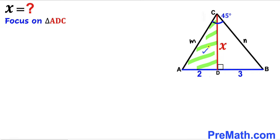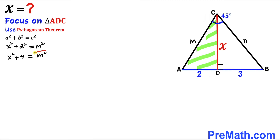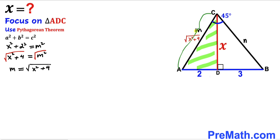Let's focus on right triangle ADC and apply the Pythagorean theorem: a² + b² = c². Our hypotenuse is m, and our two other legs are 2 and x. So we can write x² + 2² = m², which gives us m = √(x² + 4). So side AC equals √(x² + 4).